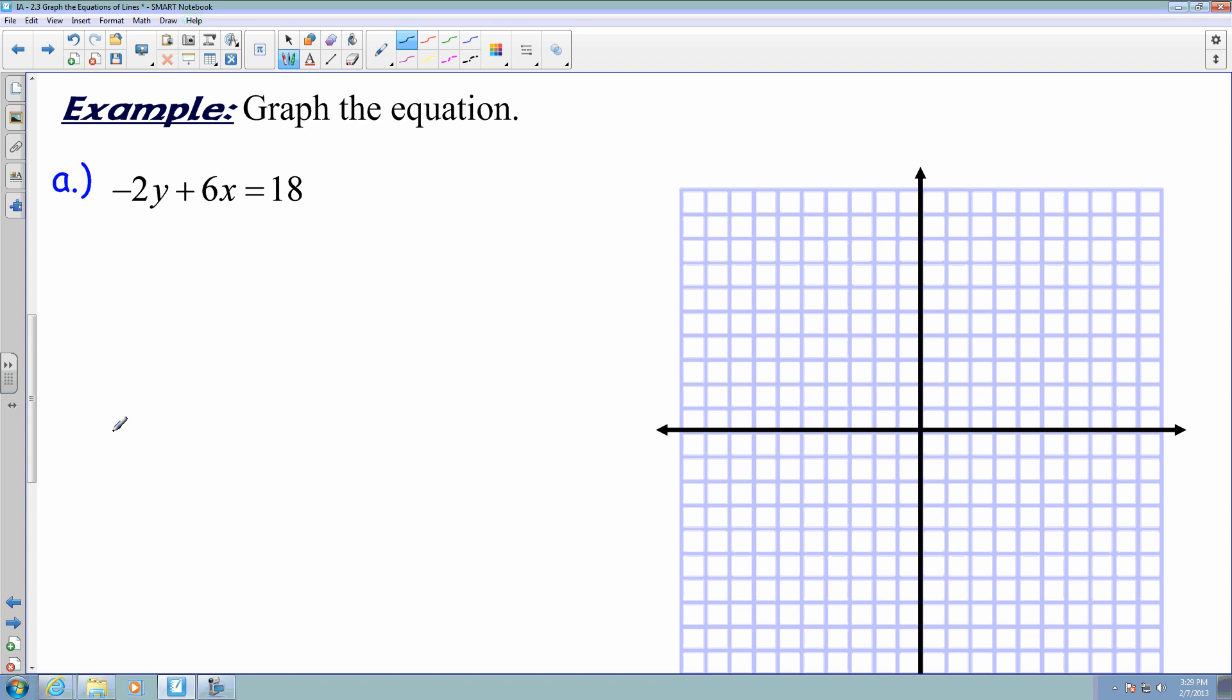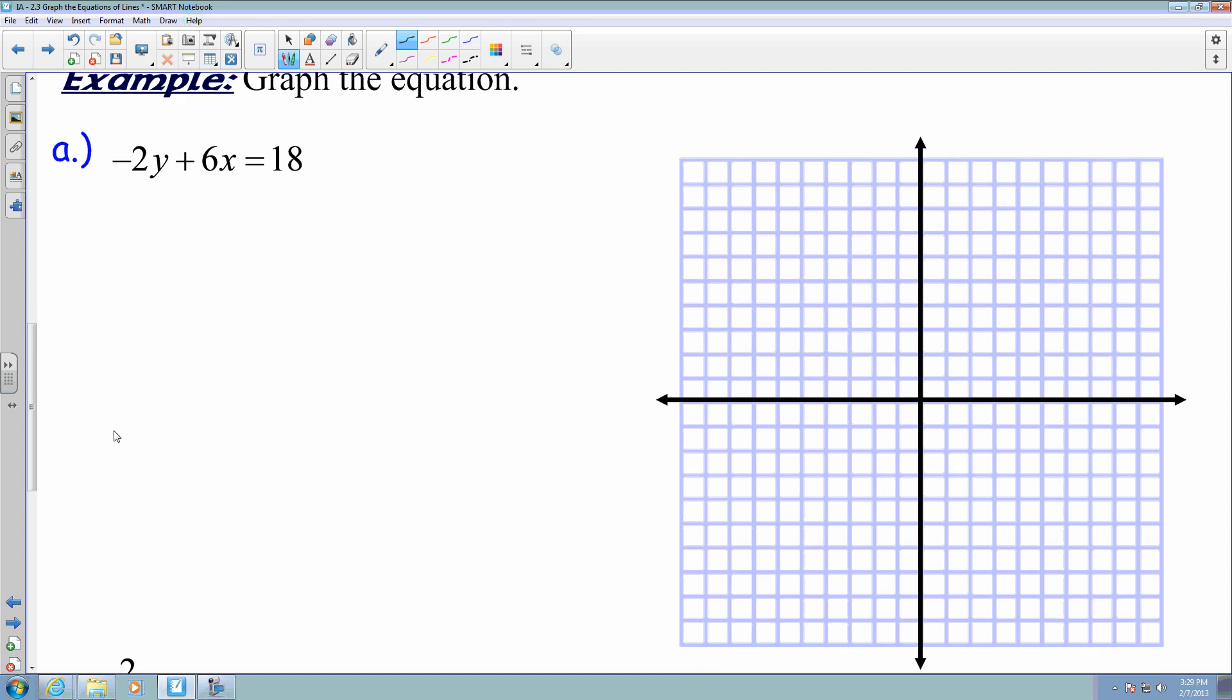So if I had this particular equation, at the moment it is not in standard form, because the standard form is Ax plus By equals C. So I just have to change this. So it's going to be 6x minus 2y equals 18. So now that I've done that, I'm going to try to find the x intercept. The x intercept just means I have to substitute in y for 0. And 2 times 0 is 0, so 6x equals 18, x equals 3. So now I get to plot 3 on the x axis.